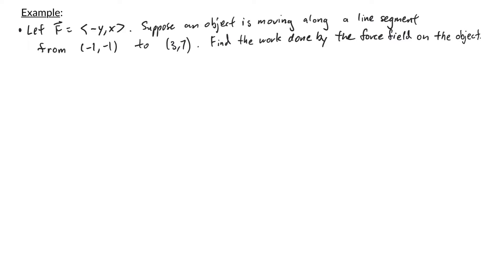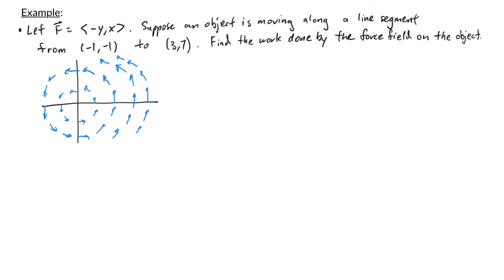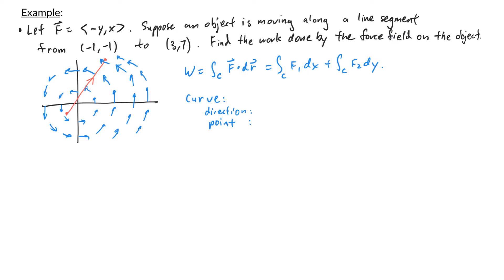Let's start by drawing a picture. Plotting the force field and the line segment from (-1,-1) to (3,7), we need a parameterization. The direction vector is found by taking differences in coordinates: 3 minus -1 equals 4, and 7 minus -1 equals 8. With starting point (-1,-1), the parameterization is r(t) = (-1+4t, -1+8t) for t between 0 and 1.